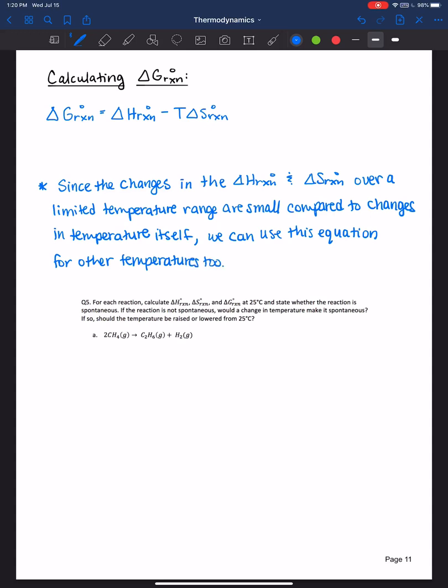Since temperature is within the equation itself, it is okay to plug in other temperatures besides 298 Kelvin, because the changes in enthalpy and entropy over a large temperature range actually are very small themselves, so they don't fluctuate too much.